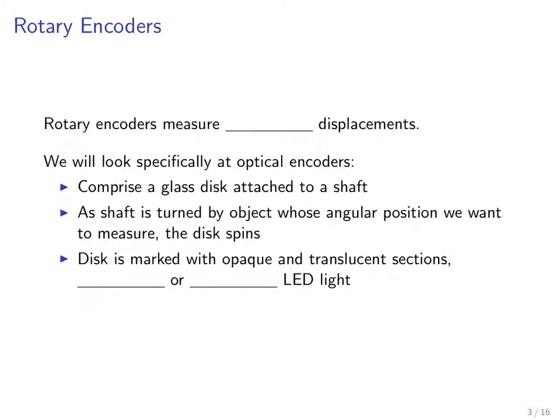So first, rotary encoders. Rotary encoders measure angular displacements. Specifically, we'll be looking at optical encoders, which generally comprise a glass disc attached to a shaft. As that shaft is turned by the object whose angular position we want to measure, the disc spins. The disc itself is marked with opaque and translucent sections that either block or pass light coming from an LED.